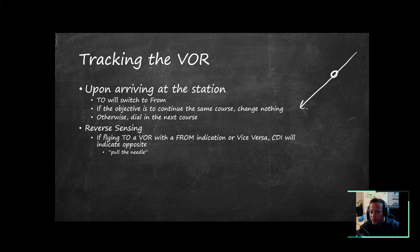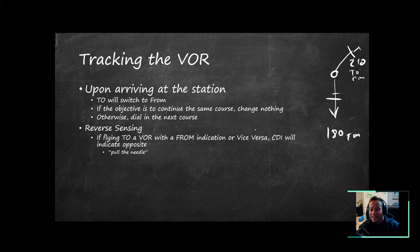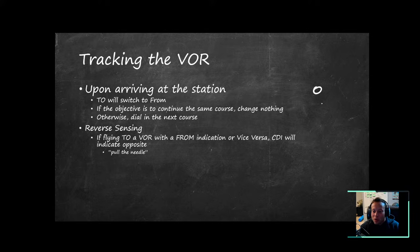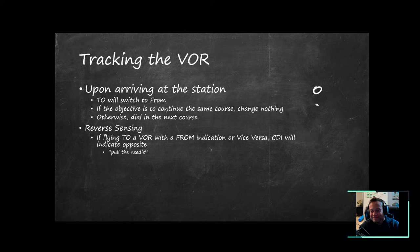If your objective is to continue in the same direction, just keep flying it. But if you want to change course to a different waypoint, tune the next radial. Once the needle switches from to to from, change to your next radial and turn to that heading. If you dial in the wrong indication — say you want to fly to the station but get a 180-degree from — it will reverse sense, telling you the opposite of what you need. Don't fly with reverse sensing.